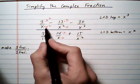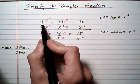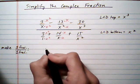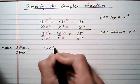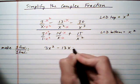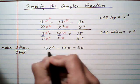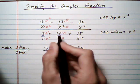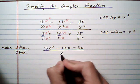So now we can rewrite what we have. The top three fractions turn into 3x squared, take away 13x, take away 30, all over the common denominator for the top, which is x cubed.